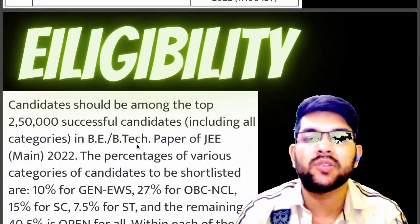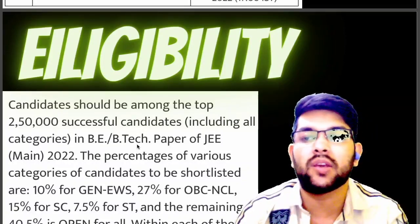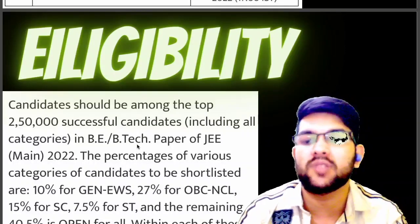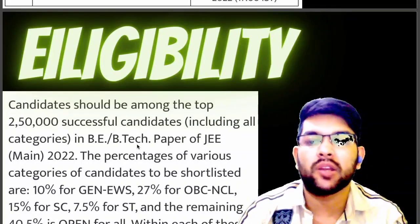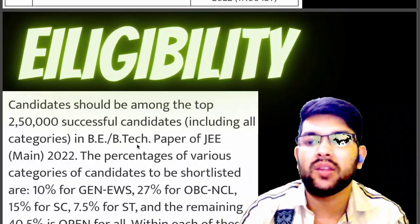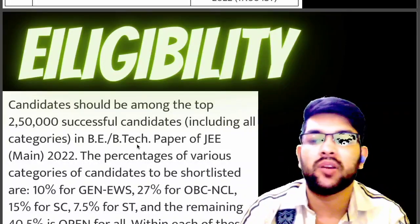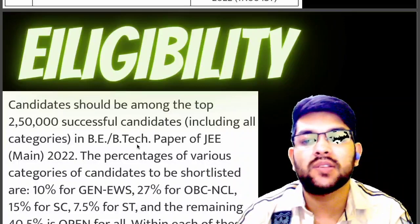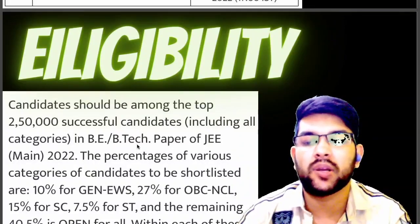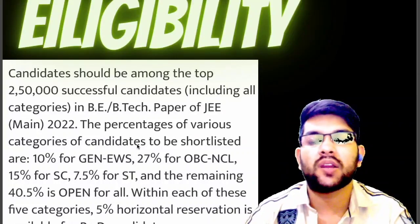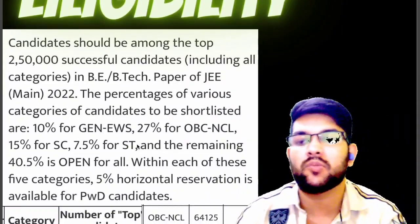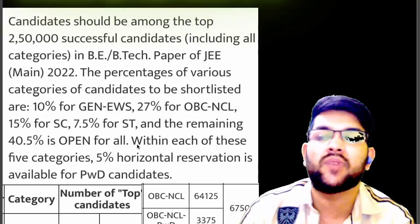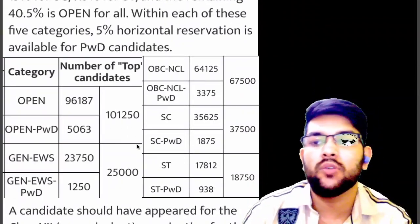Now let's talk about eligibility — a very important section. As mentioned, 2.5 lakh students will be considered for JEE Advanced. There may be 1,000–1,500 additional students due to equal ranking or equal marks. The reservation breakdown is: 10% for EWS, 27% for OBC-NCL, 15% for SC, 7.5% for ST, and 5% horizontal reservation for PWD candidates across all categories.